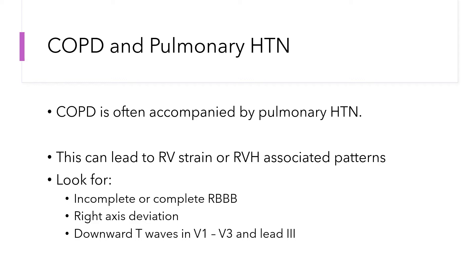COPD is often accompanied by pulmonary hypertension, especially during exacerbations, which can lead to RV strain and RVH patterns. So not only are you going to see all those things described, but you may also see incomplete or complete right bundle branch blocks. The right bundle is a thin filament that is easily compressed. If the right ventricle strains and dilates, it can mechanically compress the right bundle and cause an incomplete or complete right bundle branch block. Anytime you see a right bundle branch block, you should be thinking about pulmonary disease or increased work of breathing — especially if it's a new onset in an otherwise healthy patient, as it indicates acute RV strain and may signal a significant PE or RV failure.